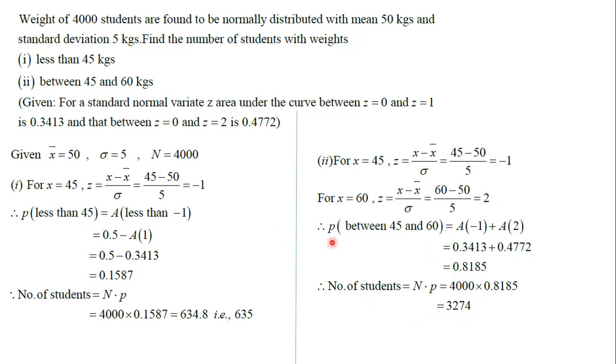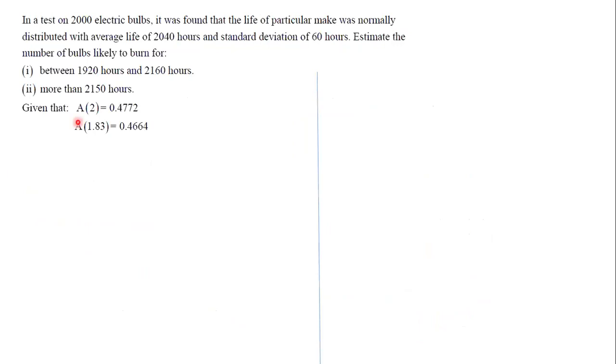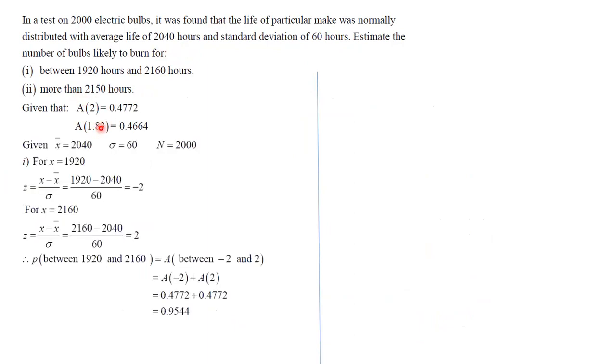Same scenario for this question also. Here, 2000 electric bulbs are given. The lifespan is given on average, which means this is the mean. This is the standard deviation. Find out more than the given frequency, so use that one.